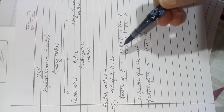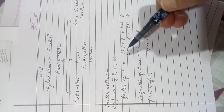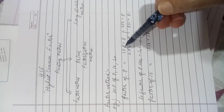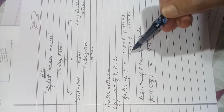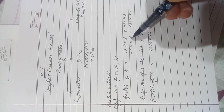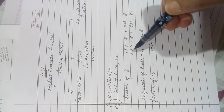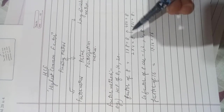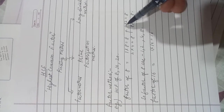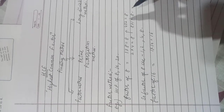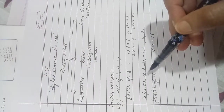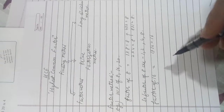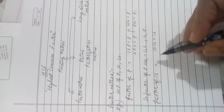Firstly, we will find the factors of 8. The factors of 8 are: 1 × 8 = 8, 2 × 4 = 8, and 4 × 2 = 8. So the factors of 8 are 1, 2, 4, and 8.